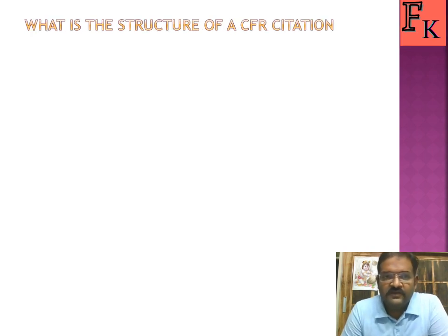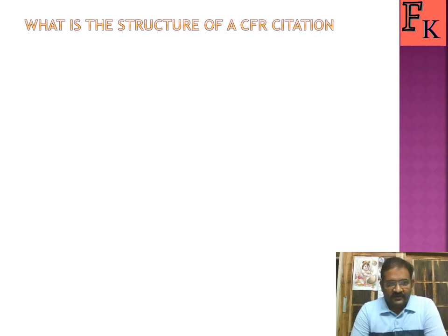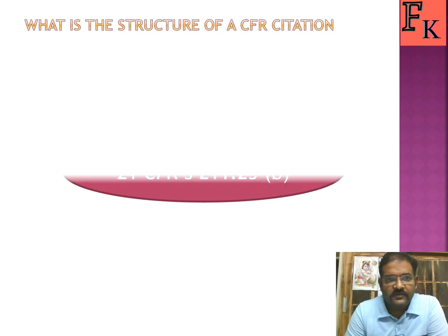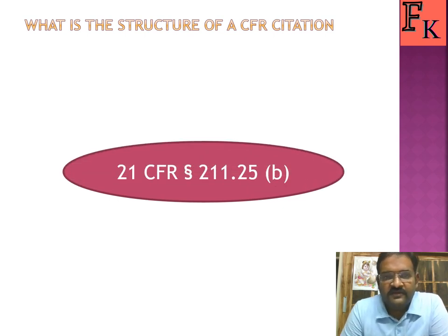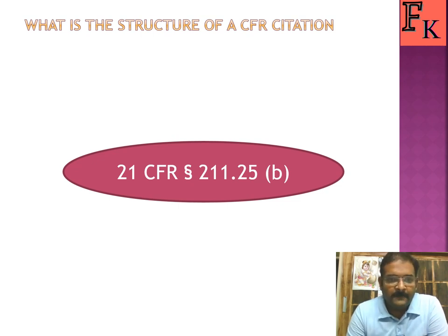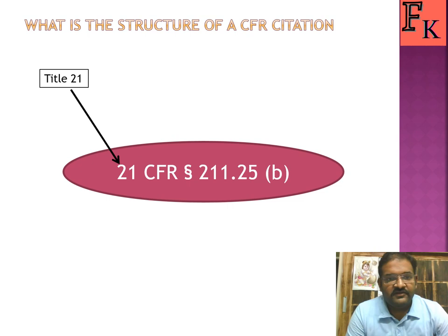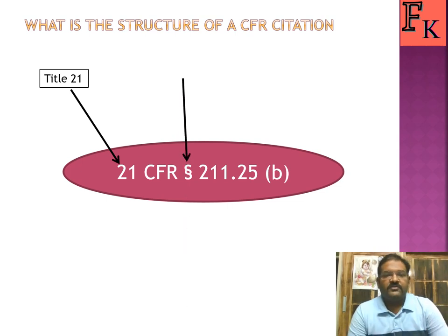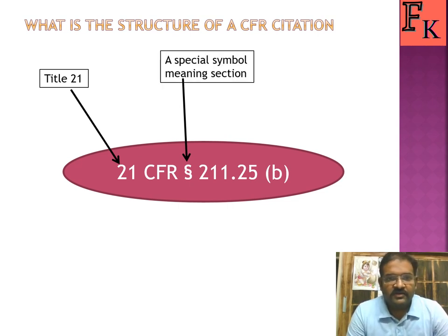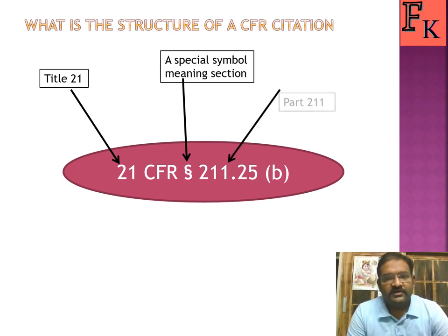Now let's look at the structure of the CFR and how to read it. Looking at this diagram: '21' refers to Title 21. 'CFR' means Code of Federal Regulations. The section symbol (§) means 'section.' So this notation represents Title 21, and '25' is the section number within that title.